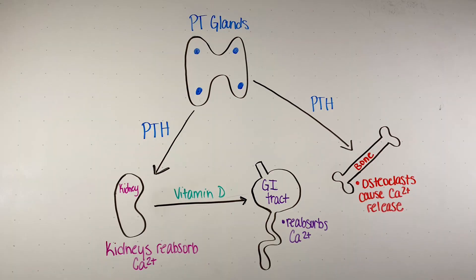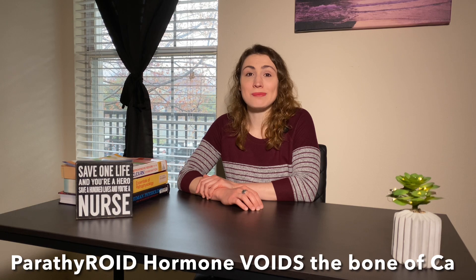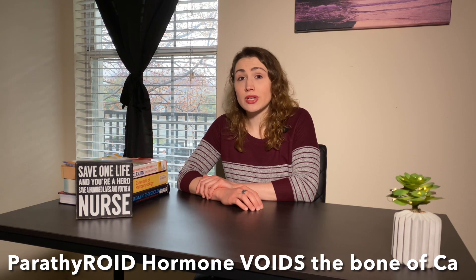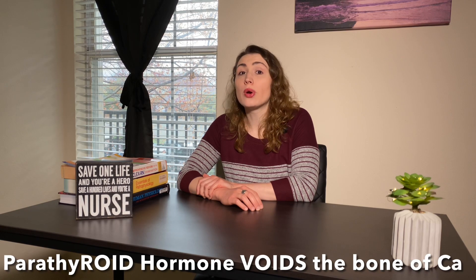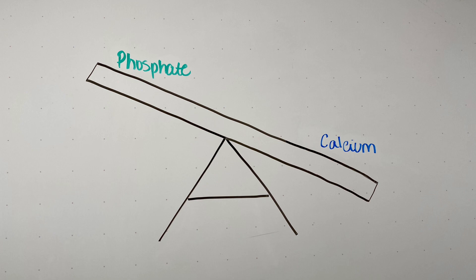The primary purpose of parathyroid hormone is to increase calcium levels in the blood. First, parathyroid hormone goes to the bone and takes calcium out of the bone so it can increase blood calcium levels. Second, it tells the kidneys to increase the reabsorption of calcium. Third, it tells the kidneys to make the active form of vitamin D, which is important in the reabsorption of calcium from the gastrointestinal tract. A memory trick: parathyroid hormone voids the bone of calcium. Also, calcium and phosphate are opposites — when phosphate is high, calcium is low, and vice versa.